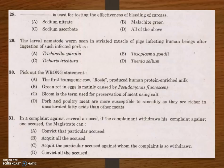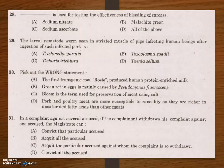Next question: dash is used for testing the effectiveness of bleeding of carcass. Options are sodium nitrate, malachite green, sodium ascorbate, and all of the above. The answer is malachite green. Malachite green is used for testing the effectiveness of bleeding of carcass.